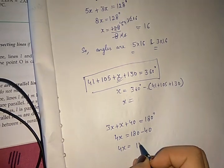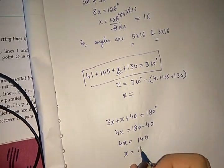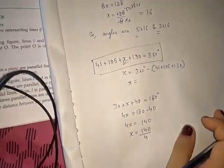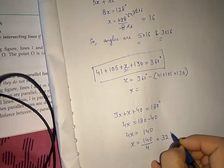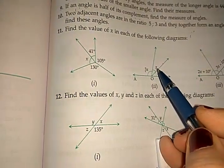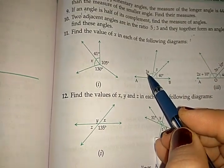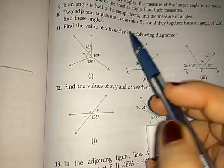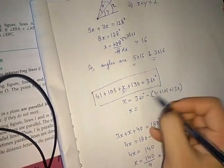So 4x equals 180 minus 40, which is 140, giving x equals 140 divided by 4, which is 35 degrees. Then the value of 3x can be found by multiplying. In all cases you need to find the value of x only.